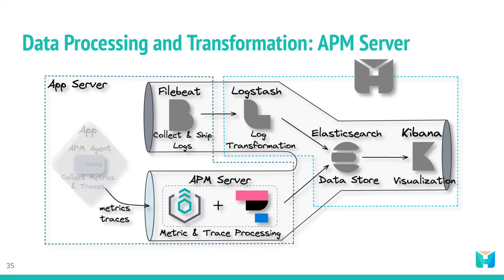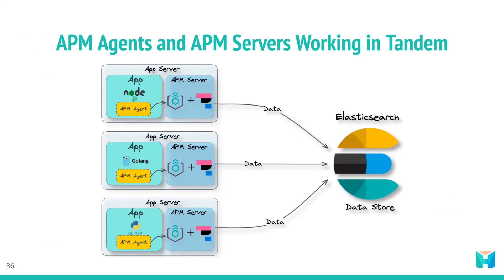The APM server comprises two parts: the Elastic Agent and the APM integration. The Elastic Agent is installed on the user's application servers to receive different data types such as metrics and traces from the APM agents. The Elastic Agent can be updated with configurations enabling the collection of new or different data sources — these configurations are implemented through agent policies. The APM integration is one of those configurations specified within an agent policy. The Elastic Agent with the APM integration acts as the APM server, which accepts tracing and metrics data, then processes and validates it and transforms it into Elasticsearch documents before sending it to Elasticsearch.